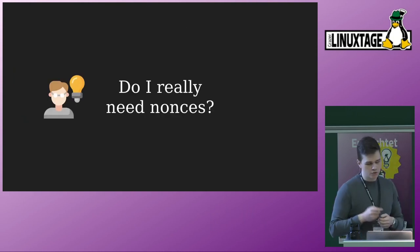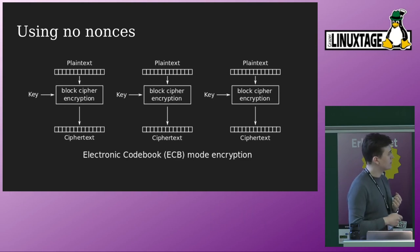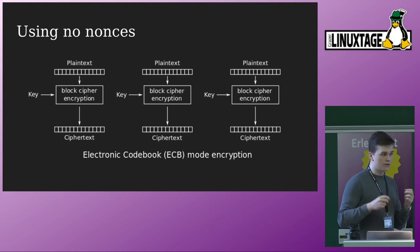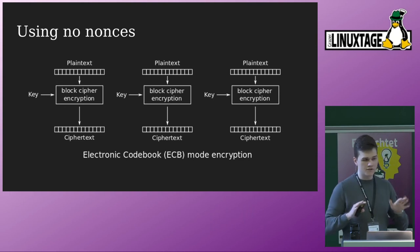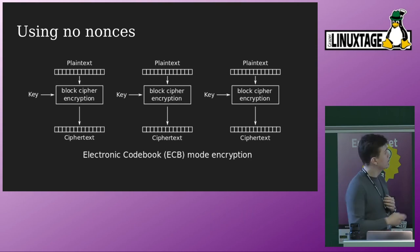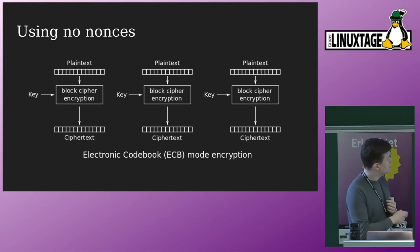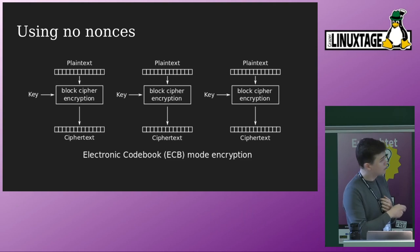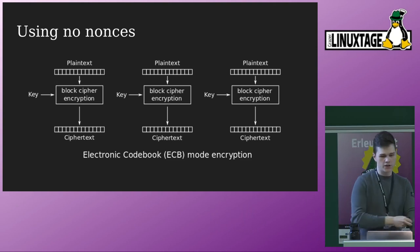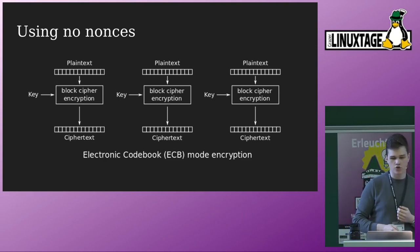Do we really need to worry about encryption modes? If you start out with cryptography, you might think: I have a plaintext, I put it through some encryption mode, and out I get a ciphertext — this seems secure, right? When I started out, I thought: I'm encrypting a plaintext, and as long as my encryption is secure, this should be okay. This idea is also called Electronic Codebook mode, or ECB for short.